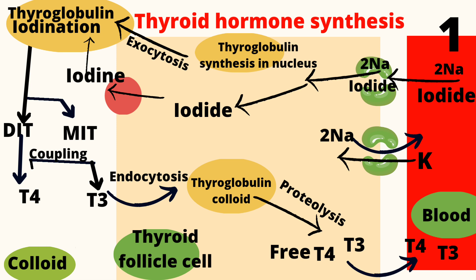After the coupling reaction, thyroglobulin colloid undergoes endocytosis and enters the thyroid follicle cell, where proteolysis of thyroglobulin takes place to release free iodotyrosines and T3 and T4. These hormones then recirculate into the blood circulation.